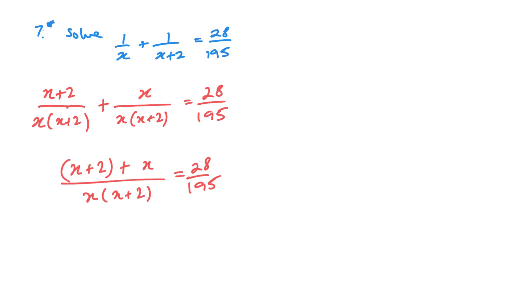So, now, we just need to simplify. So, we've got 2x plus 2 on the top. And what I'm going to do is, if it's okay with you guys, I'm going to jump a couple of steps. So, let's basically multiply by 195 and multiply by this x, x plus 2.